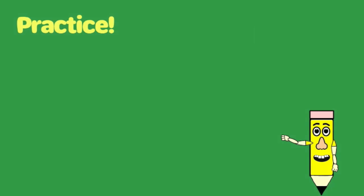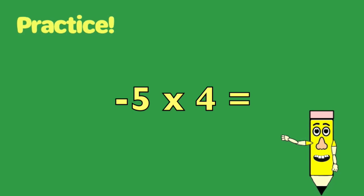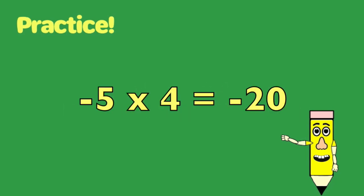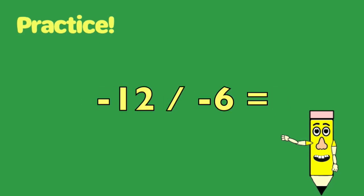Now let's practice a problem or two. Negative five times four — what do we do? We look at the signs, then we multiply. Since they are different, it will be negative.